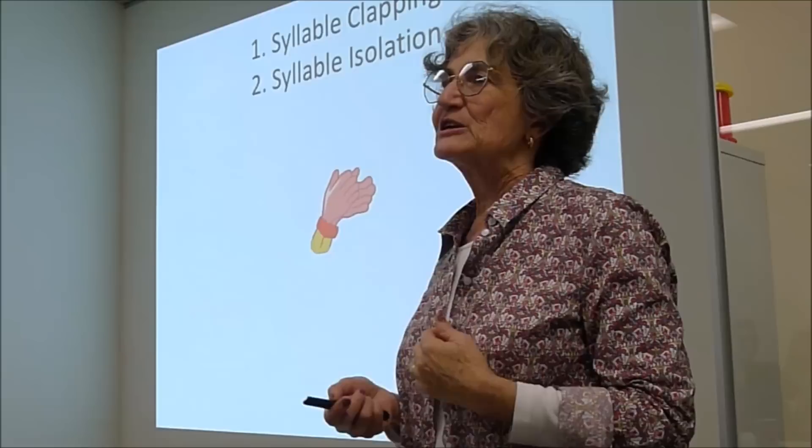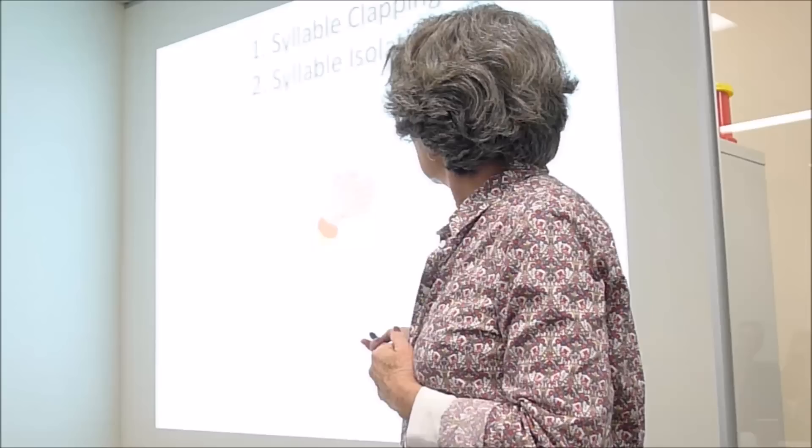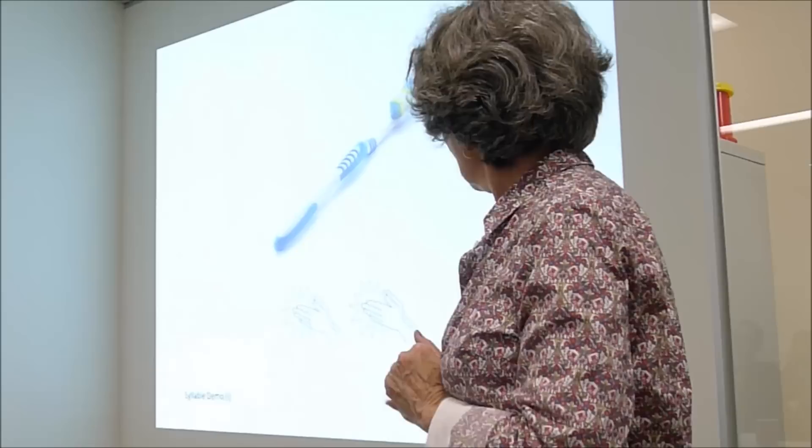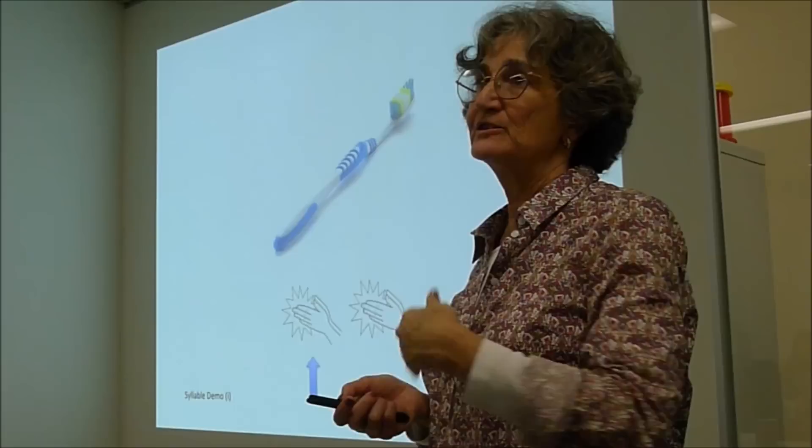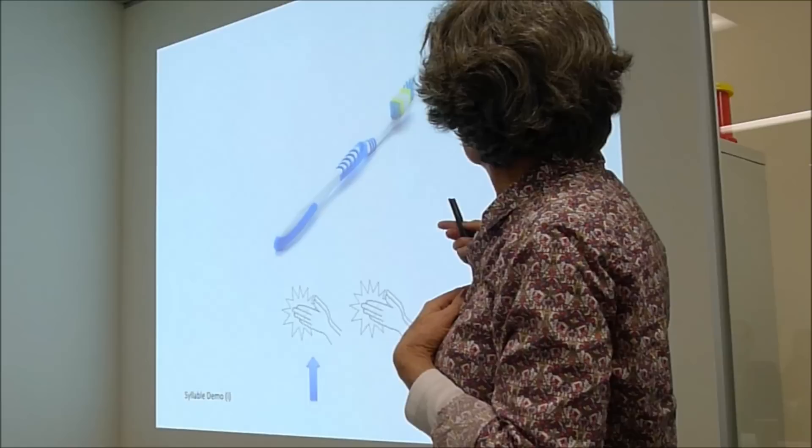I ask for both syllable clapping and syllable isolation. Here we have 'toothbrush' and they have to clap out 'toothbrush.' Then, as in the CPath, you animate an arrow that points to the syllable they've got to say, and you say 'just say that one, not that' — you can do it with gestures. Each of these things are recordings of me: the top one I say the word, so if there's a kangaroo and the kid says 'wallaby,' the administrator can say 'yes, you can say wallaby, but let's see what the lady wants us to say.'